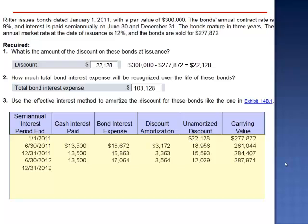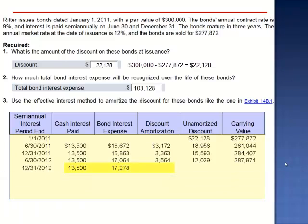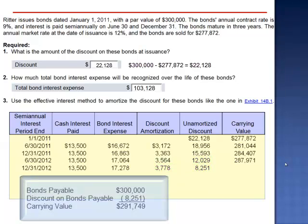December 31, 2012 — the end of period 4 — another $13,500 cash payment is made. Bond interest expense is the carrying value $287,971 multiplied by the semi-annual market rate of 6%. Bond interest expense is $17,278. Minus the amount of cash interest paid, the amount of the discount amortization is $3,778. We subtract $3,778 from the unamortized discount, dropping it to $8,251, and add $3,778 to the carrying value.